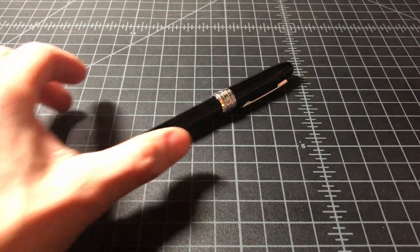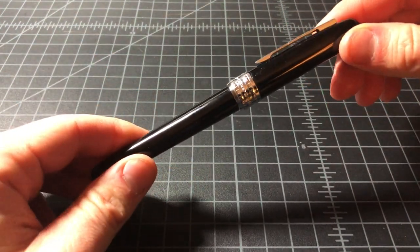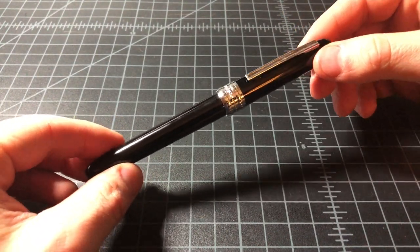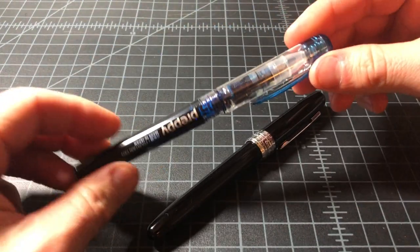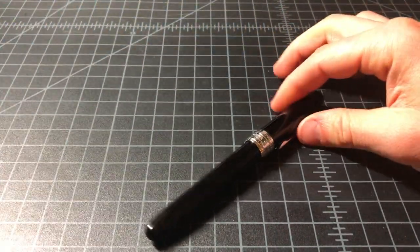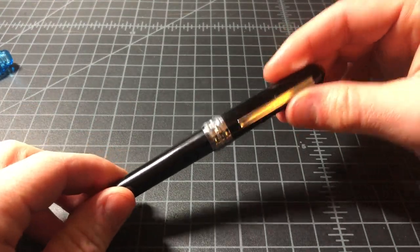I want to do a quick review of the Platinum Plaisir fountain pen. This is a $14 pen from Platinum. It's a step up from the entry-level Platinum Preppy. So this one's about $3 and this one is about $14.